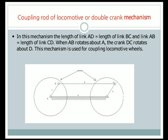In this mechanism, the length of link AD and link BC are the same, and the length of link AB and link DC are also the same. When link 1 rotates in the clockwise direction, the left wheel rotates along with it, and motion is transmitted from link 1 to link 3 through link 2. Link 2 is the connecting rod, and the rotary motion is transmitted from link 1 to link 3 by this intermediate connecting rod. This is the type of mechanism seen in railway locomotives, where one wheel transmits motion to another wheel via connecting rods.